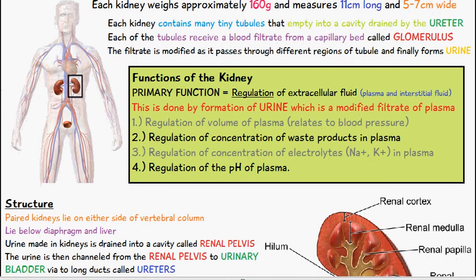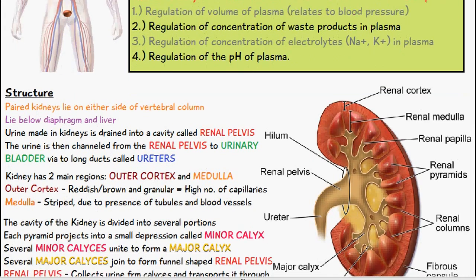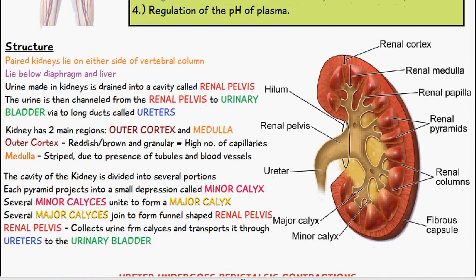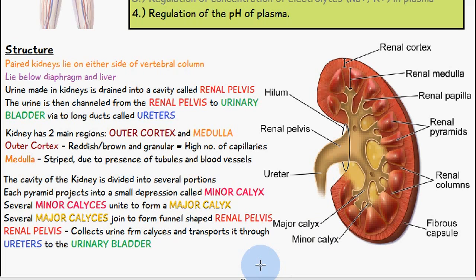Now let's look at the structure of the kidneys. In this cross-section, we can see the cortex on the outside, then the medulla, which drains into the renal pelvis, then the ureter, and eventually — though not visible in this diagram — the urinary bladder.